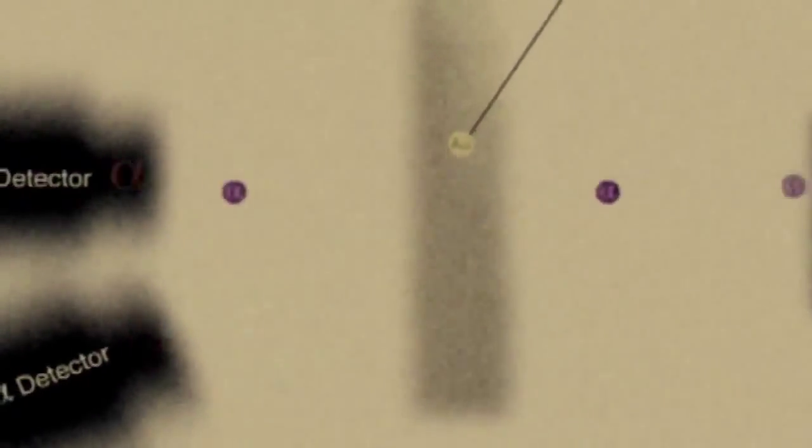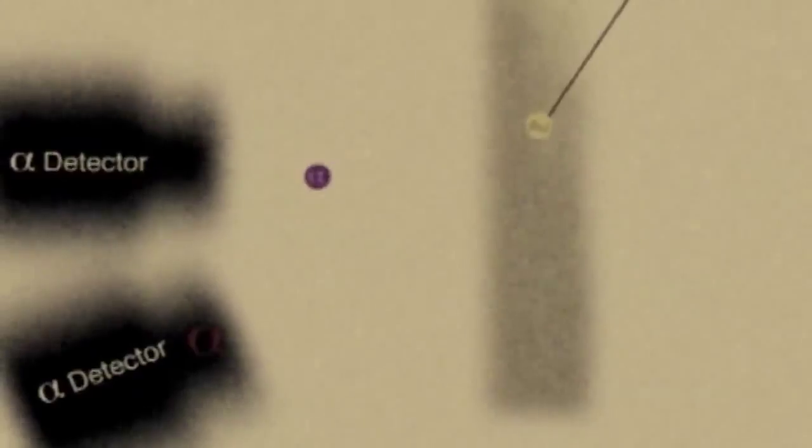What Rutherford was doing, what we're doing here, is taking a beam of particles, firing at a target, looking at the way the particles are scattered, and from that deducing what was going on inside the target.